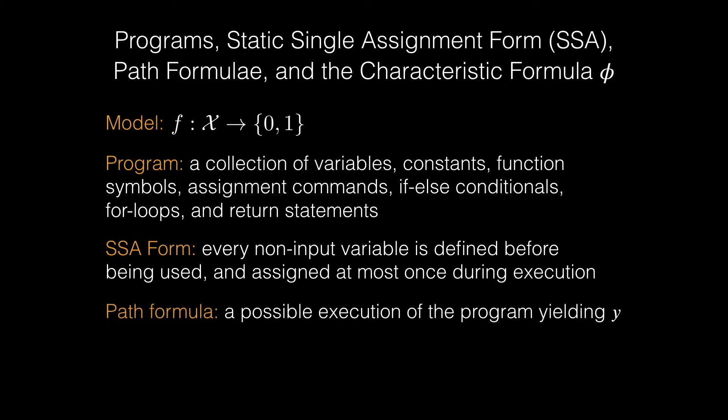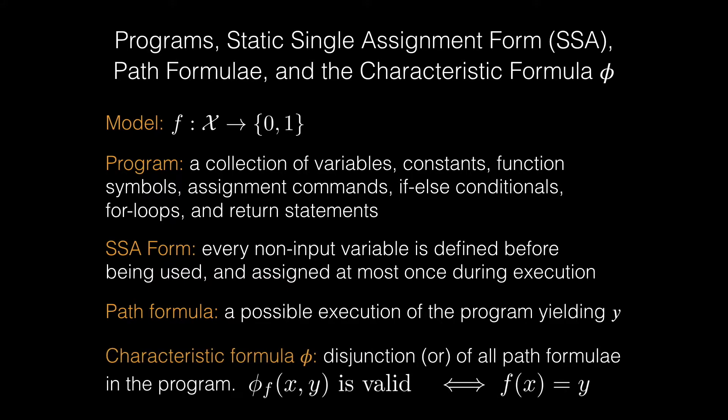A path formula is a possible execution of the program starting from X and yielding Y. The characteristic formula is the disjunction of all path formulae in the program. It's basically disjunction of any input-output pairs. And importantly, we can see that if for a given x, F(x) equals y,